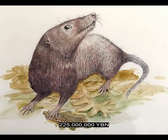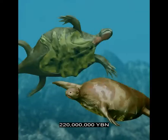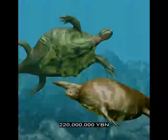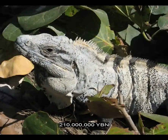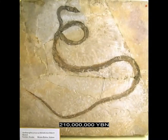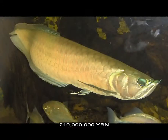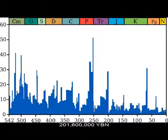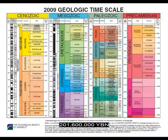Mammals evolve. First nipple, mammary gland, and breast. Ancestor of all ray-finned teleost fishes evolve. Reptiles Testudines: turtles, tortoises, and terrapins. The first flying vertebrate: pterosaur. Reptiles Iguania evolve: iguanas, chameleons, and spiny lizards. Reptiles Scleroglossa evolve: snakes, skinks, and geckos. Teleosts: bony tongues. Mass extinction. End of the Triassic and start of the Jurassic Period.